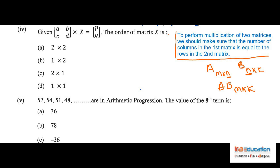The given problem has a 2×2 matrix and the result is a 2×1 matrix (2 rows, 1 column). To find the order of matrix X: the number of columns in A must equal the number of rows in X, and the result needs 1 column. Therefore the order of X is 2×1.